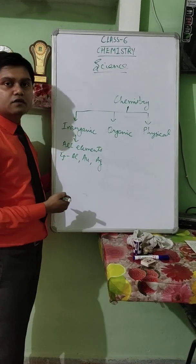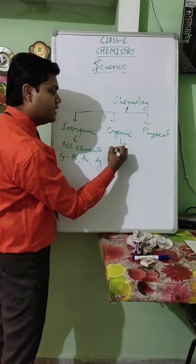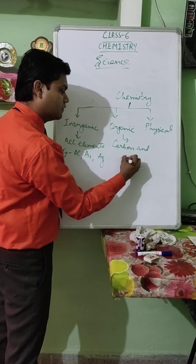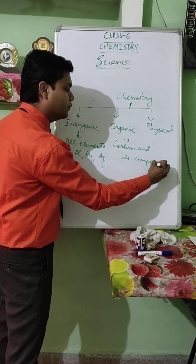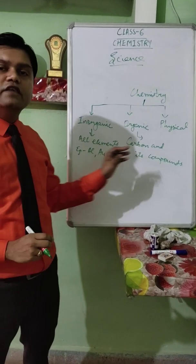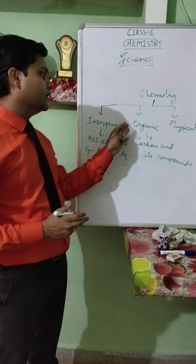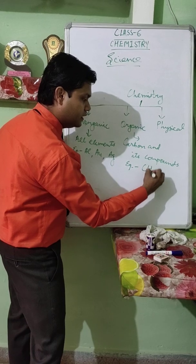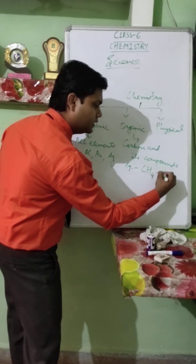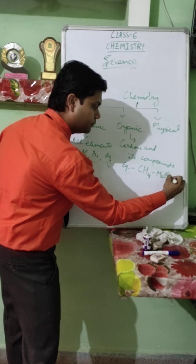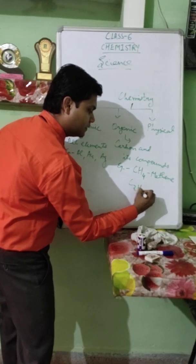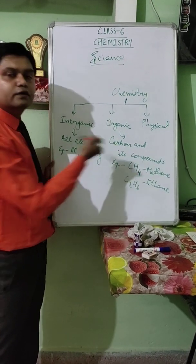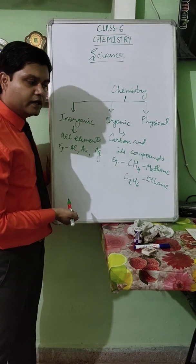The second branch of Chemistry is Organic Chemistry. Here we are studying about carbon and its compounds. Whatever substances are made up of carbon come in the category of Organic Chemistry. For example, Methane (CH4) and Ethane (C2H6) — both consist of carbon, therefore they both come in the category of Organic Chemistry.